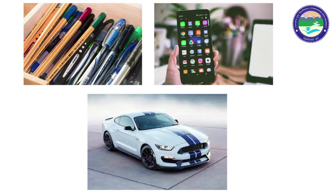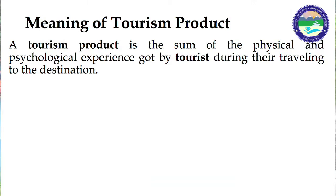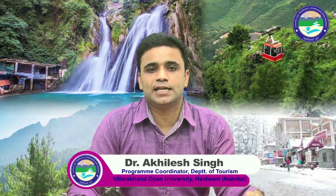But in the case of tangible products, for example a pen or mobile phone, which are tangible in nature, we can keep them with us. Now we will understand about the meaning of tourism product. A tourism product is the sum of the physical and psychological experience got by tourists during their travelling to the destination. A tourism product is service in nature and is also known as an intangible product. But actually, a tourism product includes some physical tangible products and intangible products.